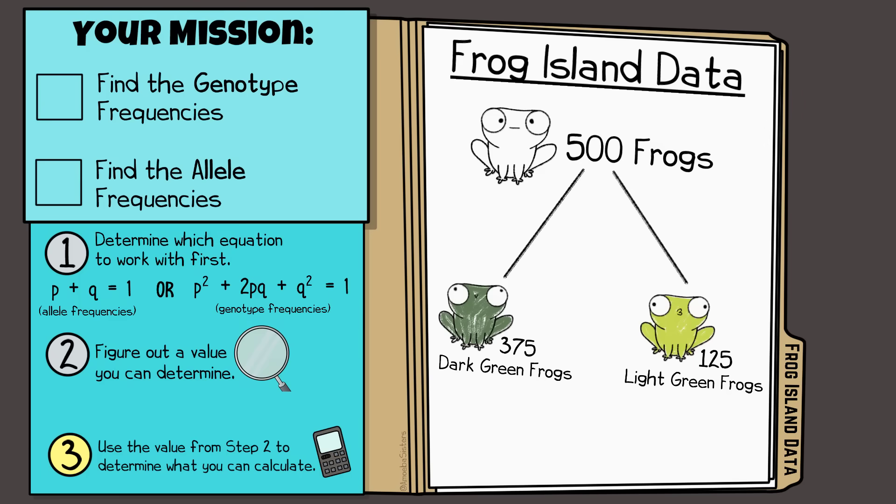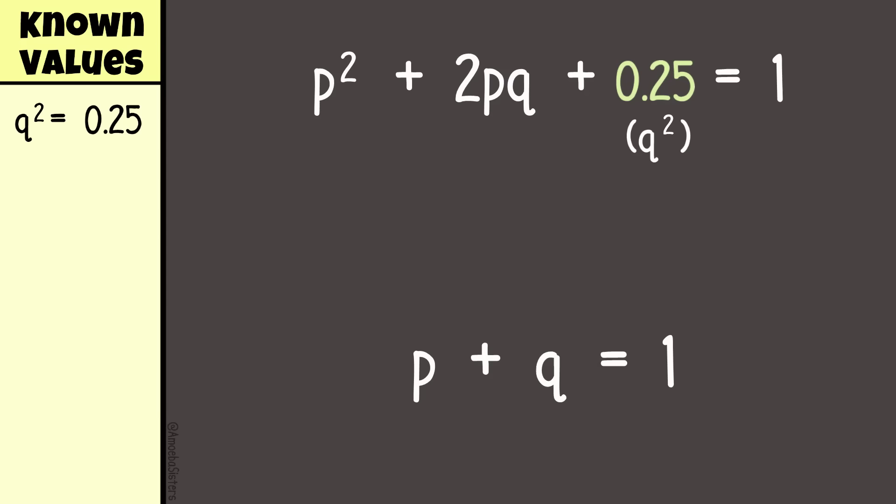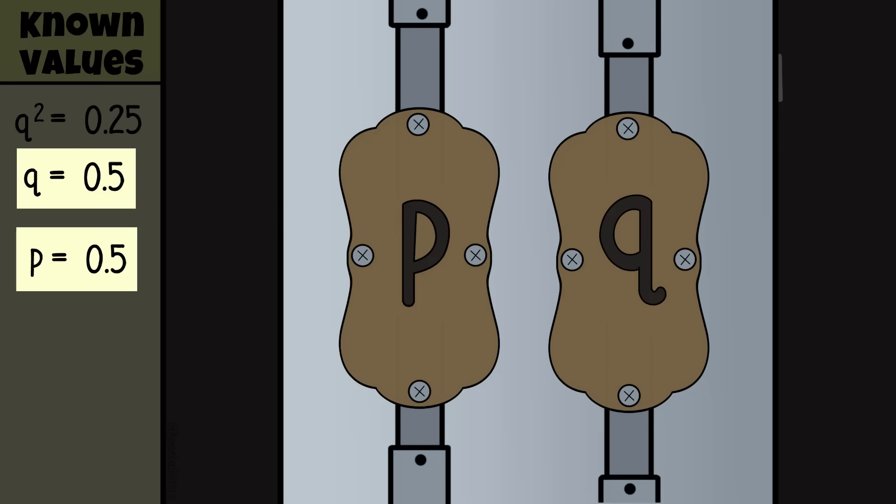Step 3. Take a value you solved from the previous step and calculate from there. So if I know that q² is 0.25, then I could go ahead and solve for q. If q² is 0.25, I can determine q if I take the square root of 0.25. Therefore q is equal to 0.5. That's the allele frequency for the recessive allele little g. If I know the q value, I can find out the p value using the first equation. Since p plus q is equal to 1, now I know that p is equal to 0.5. That's the allele frequency for the dominant allele big G.